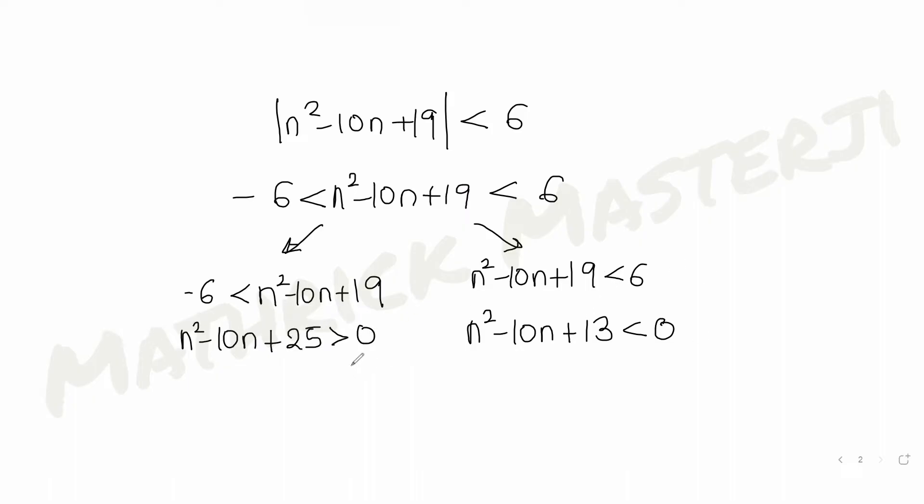Once I have both of these quadratic expressions, I can write this in the form of a square minus 2ab plus b square. So I can write that as n square minus 2 times 5 times n plus 5 square greater than 0. You get that as n minus 5, the whole square greater than 0.